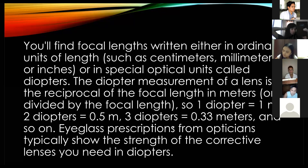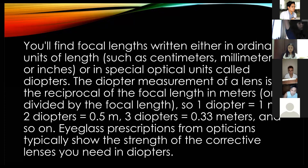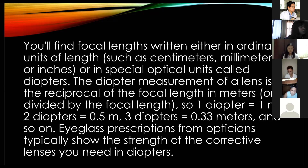One divided by the focal length gives you the diopter value. So one diopter equals one meter. Two diopters equals 0.5 meters, and three diopters equals 0.33 meters, and so on. Eyeglass prescriptions from opticians typically show the strength of corrective lenses in diopters — these are used by medical practitioners when talking about the grade of your lens.